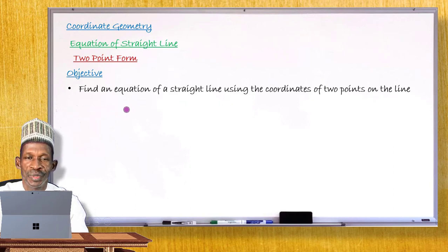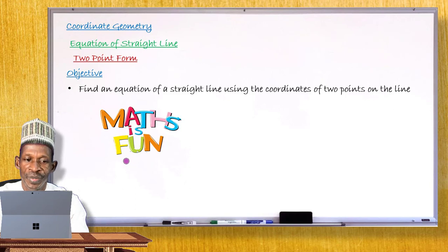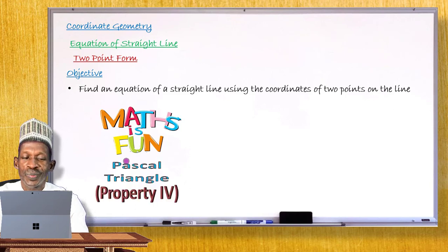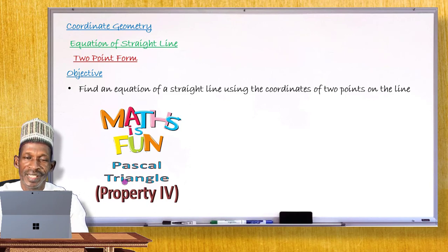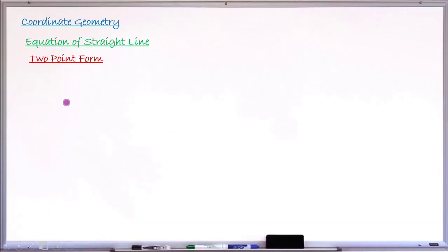As usual, we have our segment today. I'll give you another interesting property of Pascal's Triangle — this is property number four. I'll give you this interesting property after completing my lesson today, so don't go away.